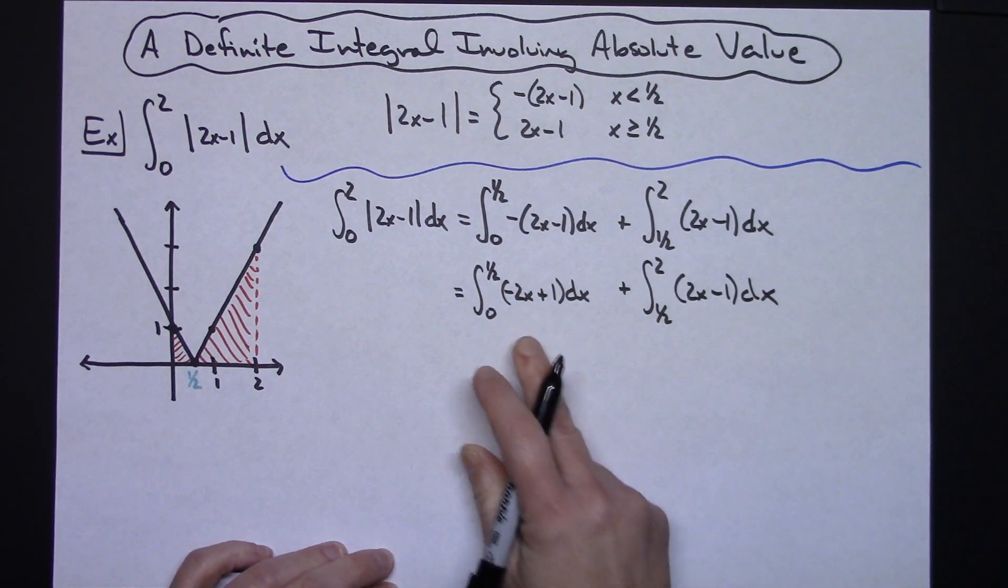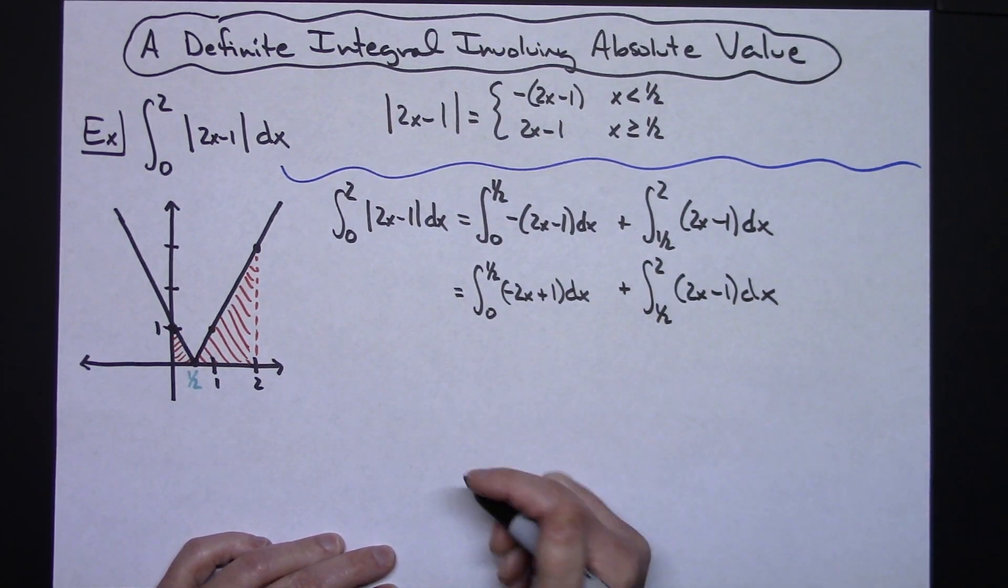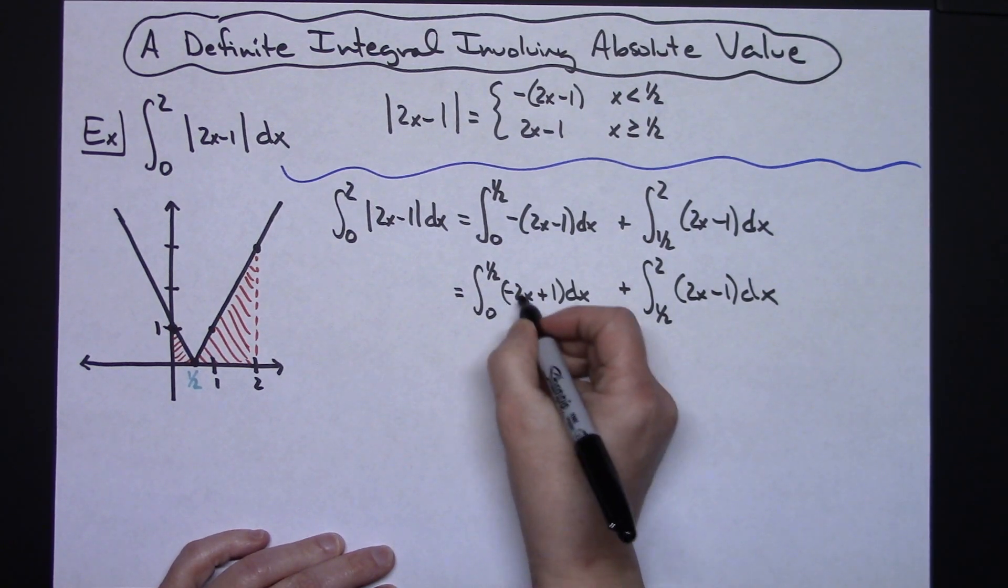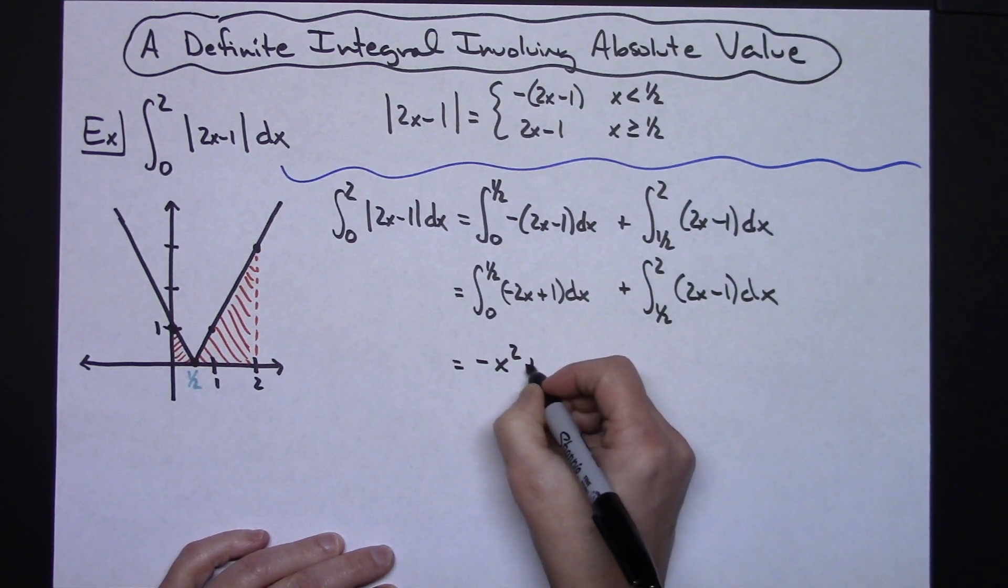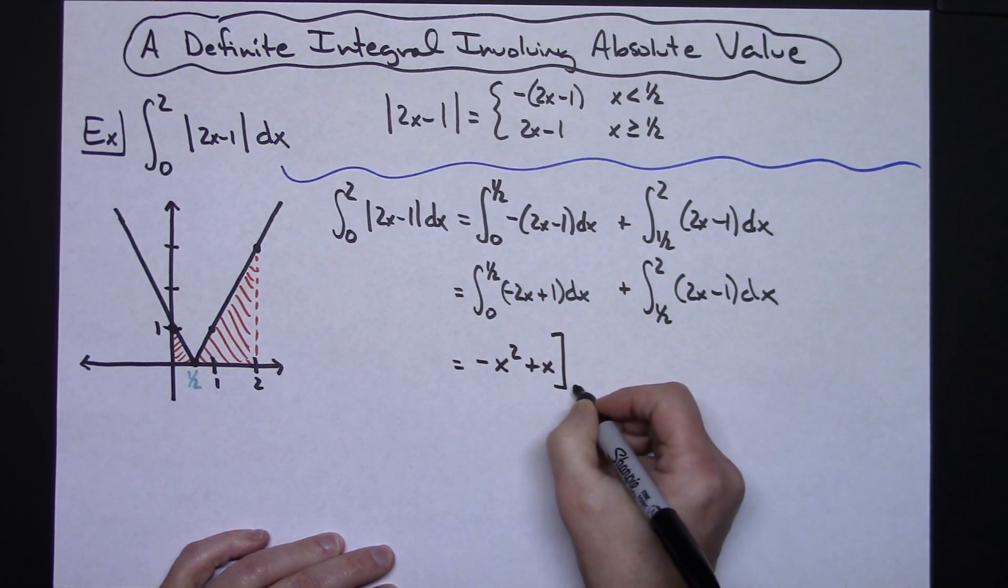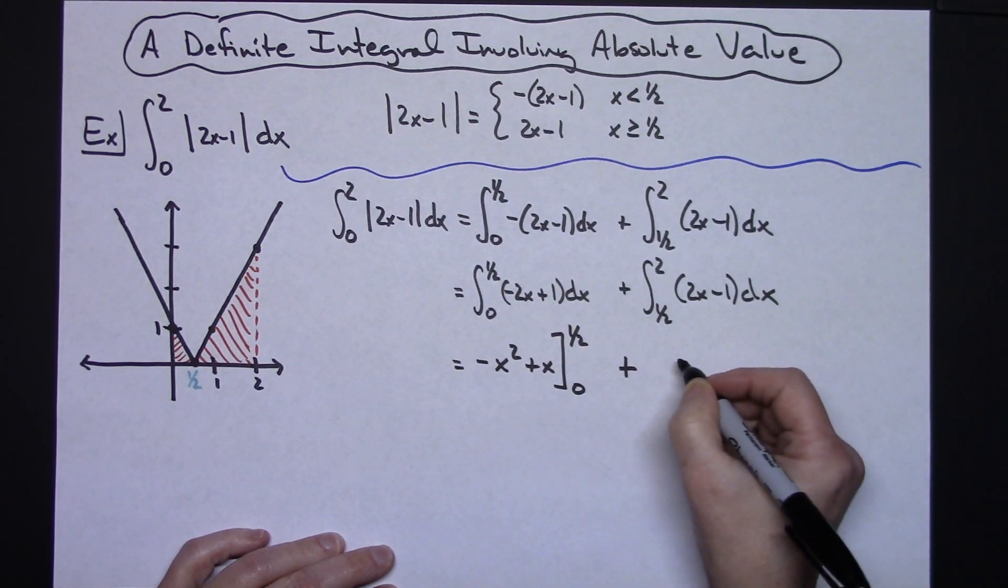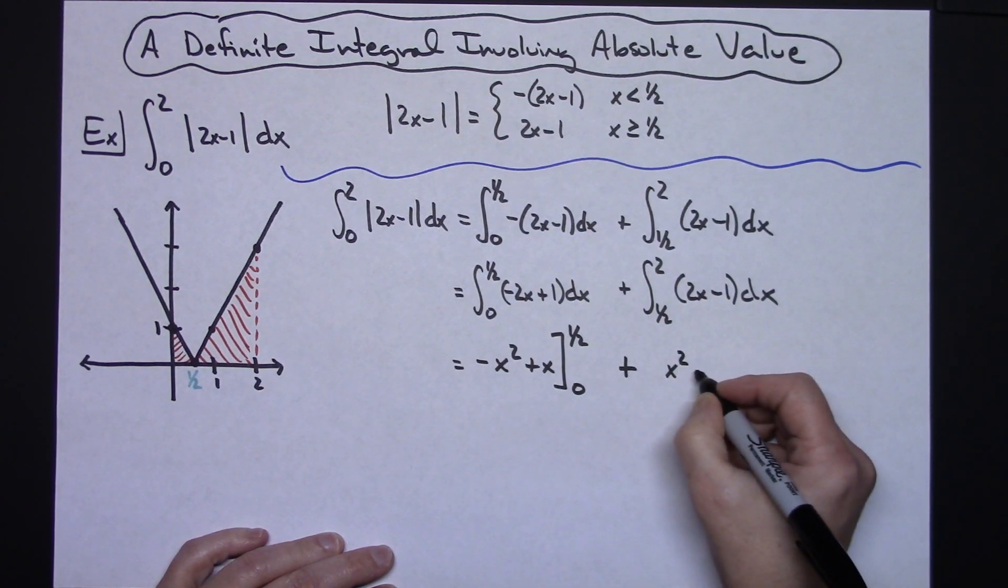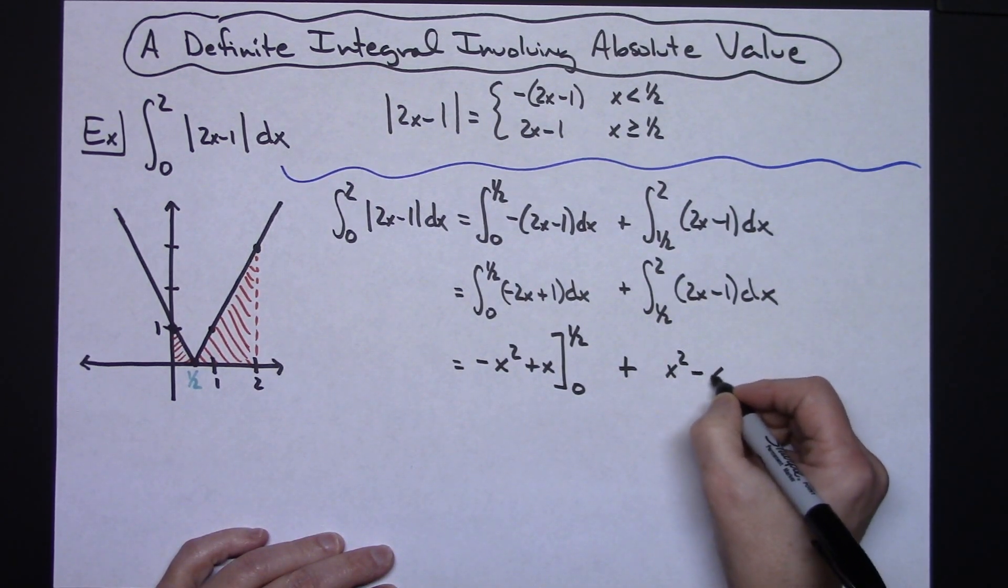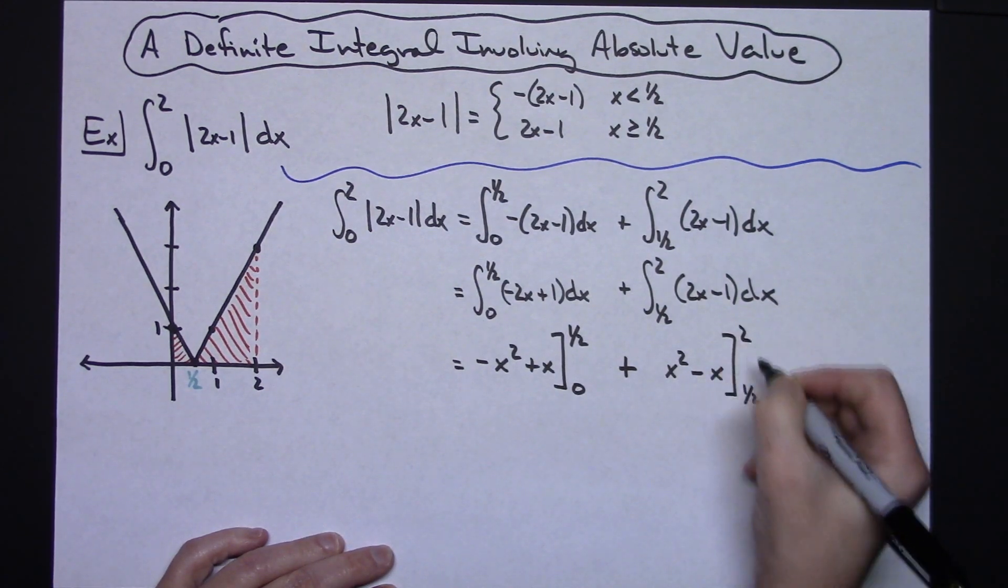Now it's going to be straight integration on both of these and then evaluate them and add them together. So as I integrate the negative 2x I'm going to get negative x squared plus x and we will be running that from 0 to 1 half. I will add to that x squared minus x running that from 1 half to 2.